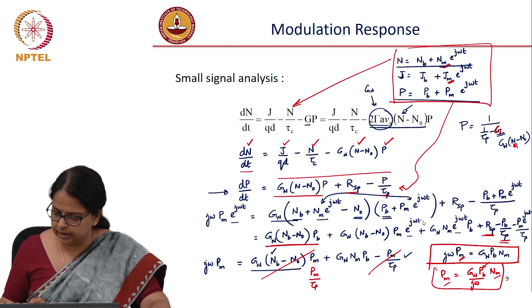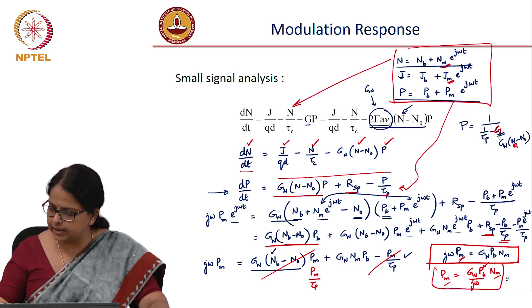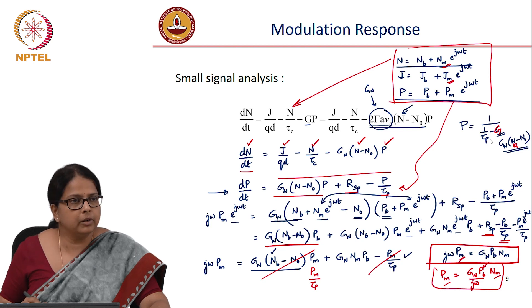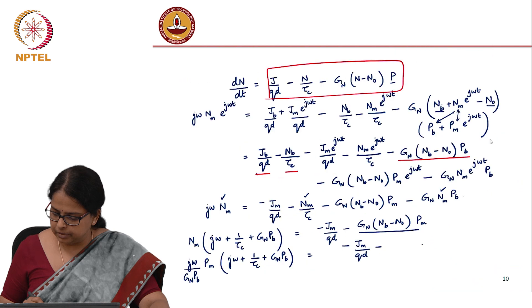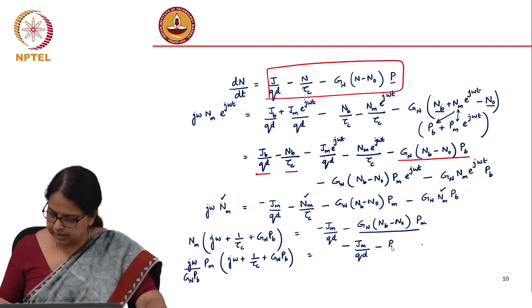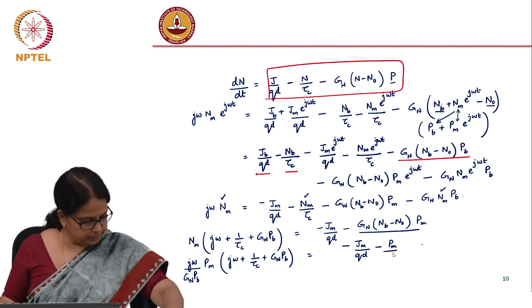We said g_n times (n_b - n_0) is going to be 1/tau_p. So this term equals p_m/tau_p.